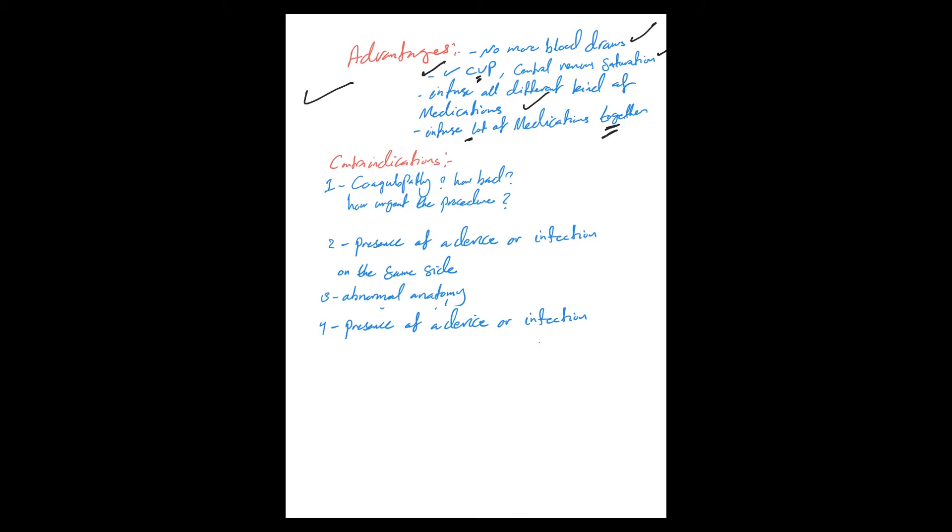Contraindications: these are general contraindications, but enjoy - coagulopathy. Critically ill patients most of the time are coagulopathic. They can be in DIC, have severe thrombocytopenia, or be on anticoagulation for some reason. It's not an absolute contraindication. If you have a critically ill, crashing patient, you don't have time to reverse it. You can still go ahead and do it, but it has to be done by an experienced person.